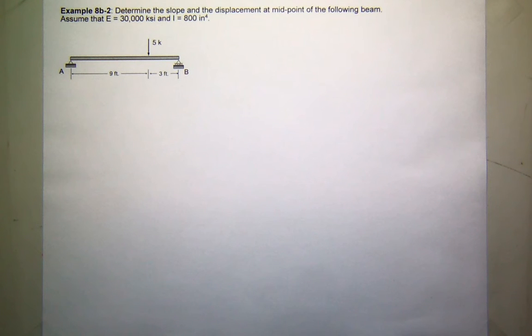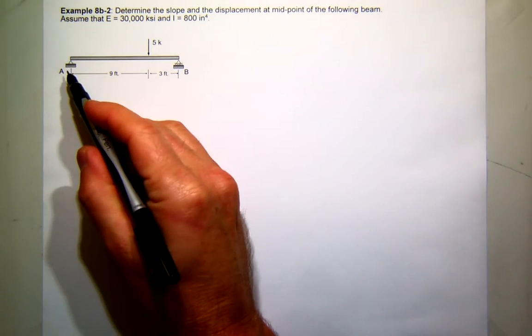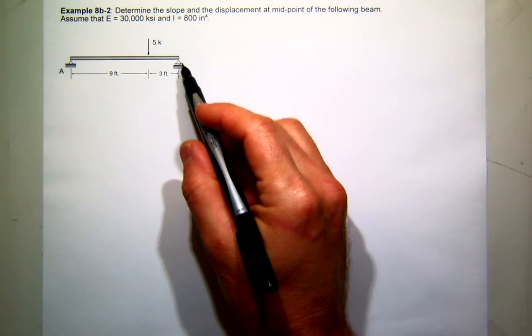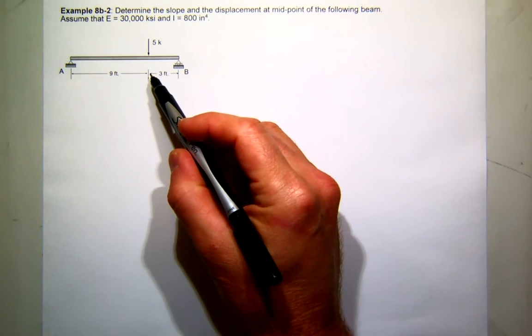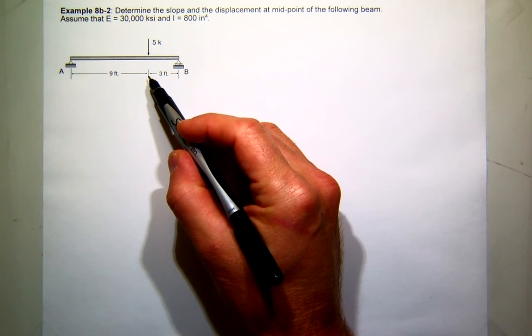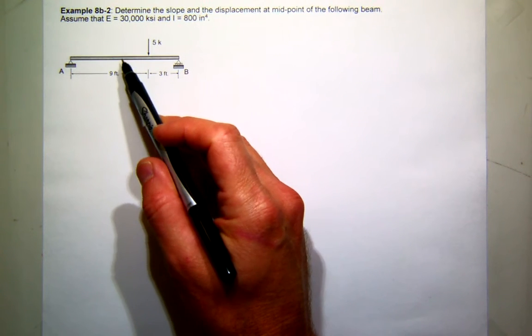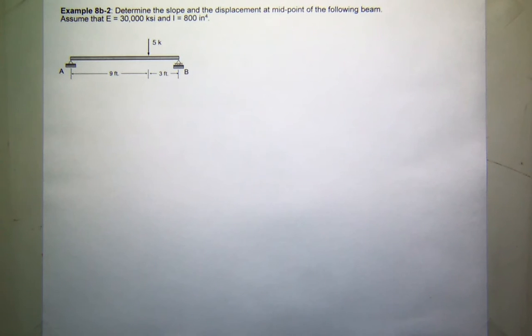Okay, so here's a problem: a simple supported beam with a pin at A, roller at B, 5 kip load at 9 feet from A, and we want to find the slope and displacement at the midpoint. So we're going to use conjugate beam.